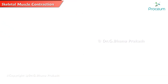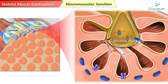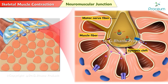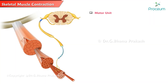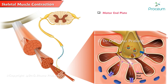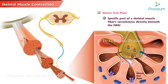Skeletal muscle contraction. Neuromuscular junction is the site where a motor nerve fiber and a skeletal muscle fiber meet, also called synapse or synaptic cleft. In order for a skeletal muscle to contract, its fibers must first be stimulated by a motor neuron. Motor unit is one motor neuron and many skeletal muscle fibers. Motor endplate is the specific part of a skeletal muscle fiber sarcolemma directly beneath the neuromuscular junction.